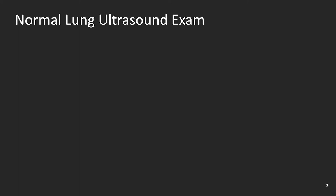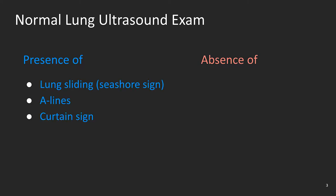Lung ultrasonic evaluations are established both positively and negatively — that is, by the presence of some findings combined with the absence of other findings, both components being equally important. A normal or clear lung ultrasonic evaluation is comprised by the bilateral and homogeneous presence of lung sliding, also known as the seashore sign, A-lines, and the curtain sign, plus the absence of B-pattern consolidations.